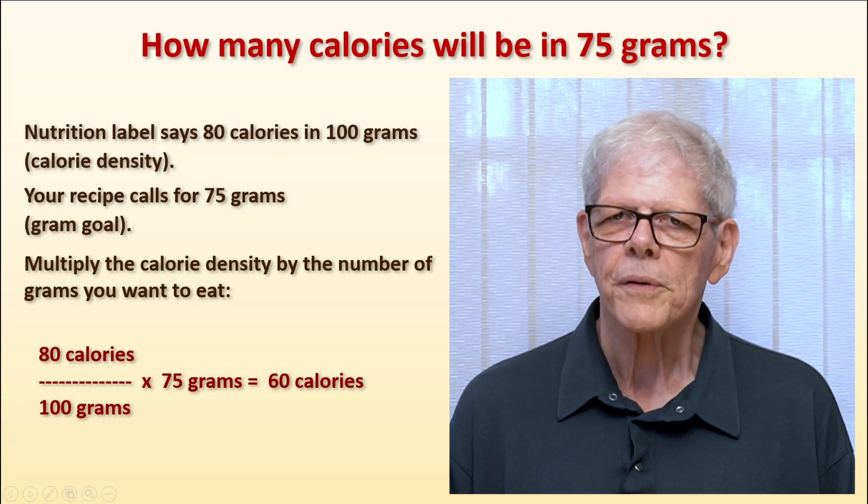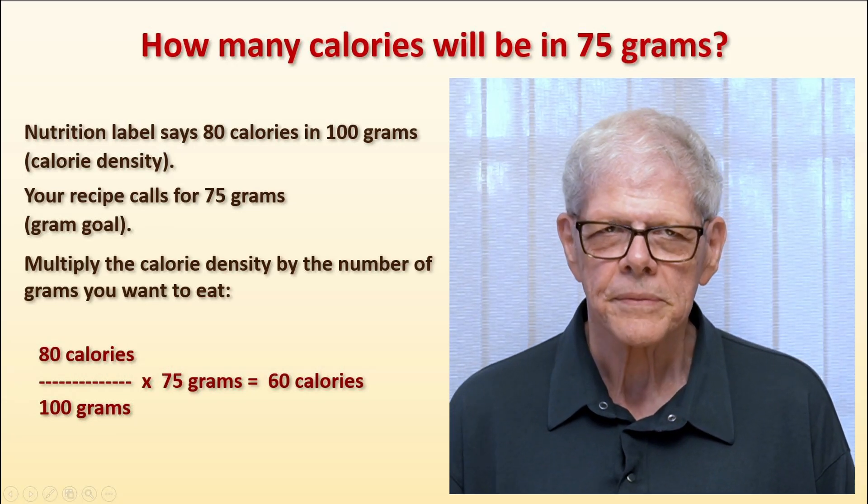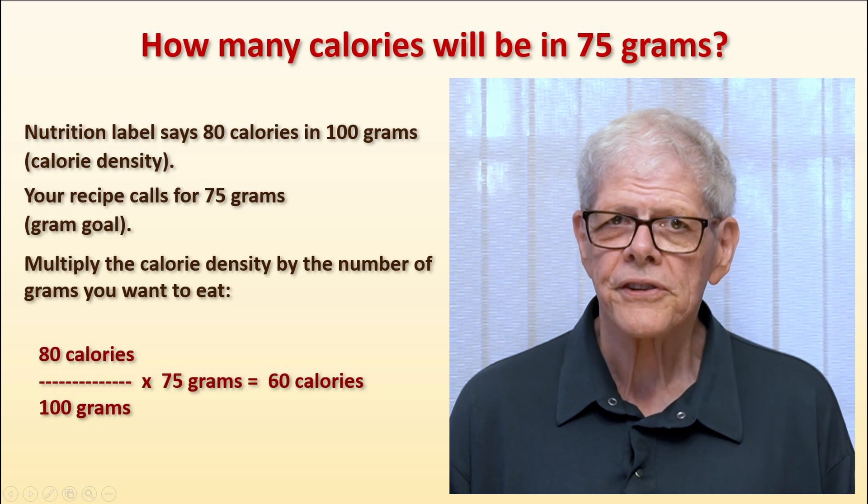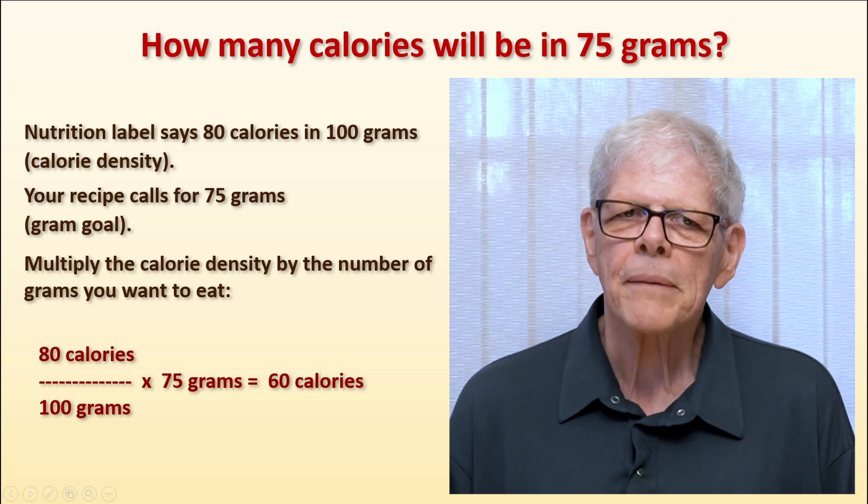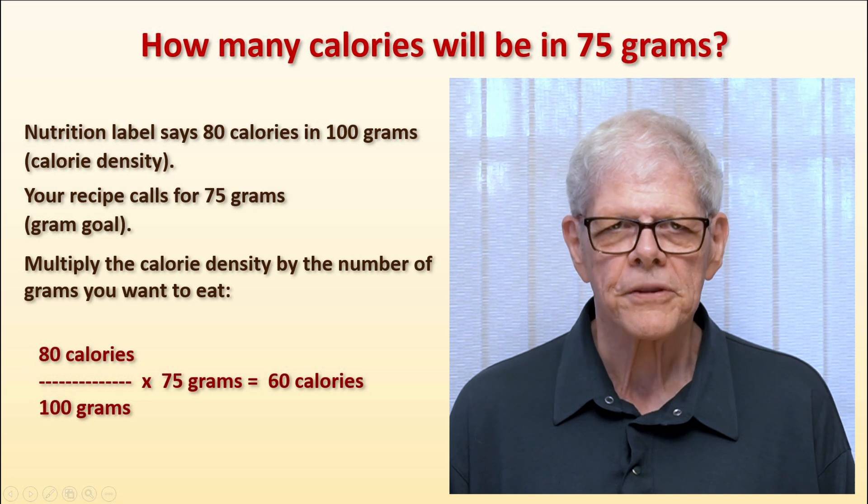Conversely, you may have a recipe that requires 75 grams of an item, but the nutrition label still says 80 calories per 100 grams. How many calories of the item will be in your recipe?